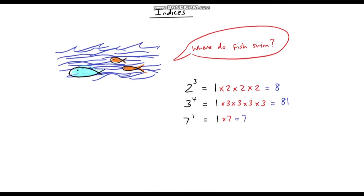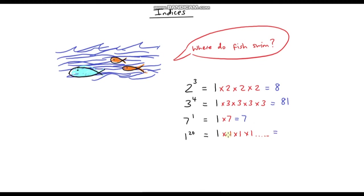Let's say we've got 1 to the power of 20. We start with 1 and we're going to multiply by 1 twenty times. I could write out times 1, twenty times, but that'd be a bit redundant because anything times 1 is 1. So my answer is just 1.